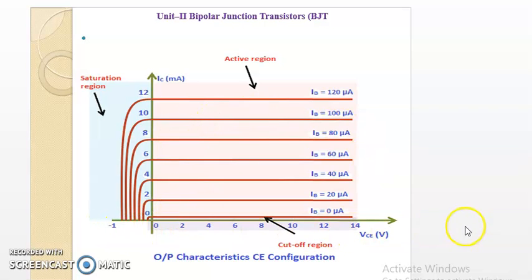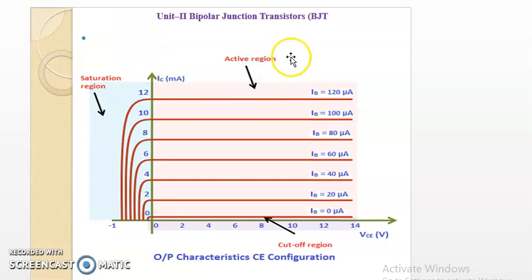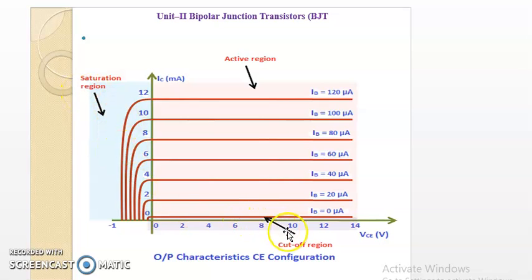Here VCE is taken along the x-axis and IC is taken along the y-axis. This region is the active region. This one is the saturation region, and this one is the cutoff region.